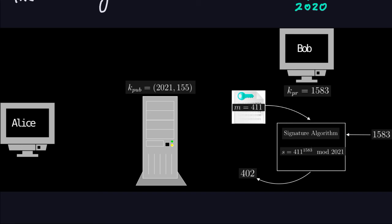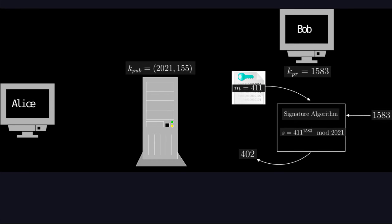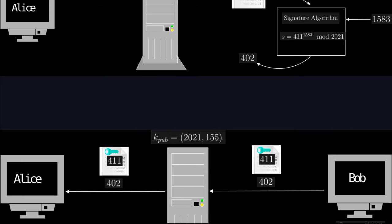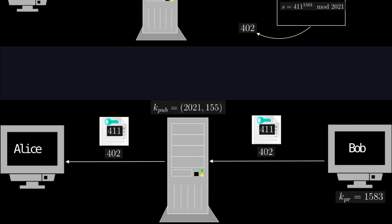Once Bob has the signature, the pair (message, signature) = (411, 402) goes to the channel. In practice, Bob should encrypt this pair before sending — for example using AES — but to keep this example simple, we assume Bob sends (411, 402) as-is. This is not what you would do in practice; you must encrypt the two numbers before sending.